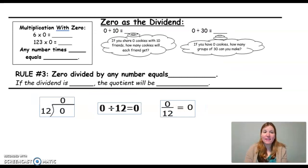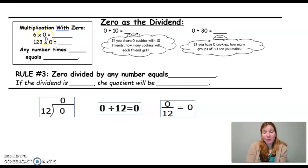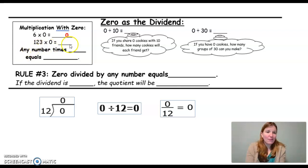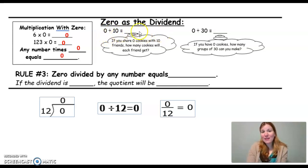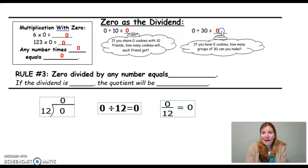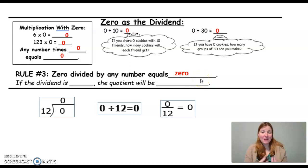Next, let's take a look at 0 as the dividend. Let's first review multiplication with 0. 6 times 0 means I have 6 cookies on each plate but I have 0 plates — 0 groups. It doesn't matter how many cookies are on the plate; if I don't have any plates, I have 0 cookies. 123 times 0 is 0. So any number times 0 equals 0. Thinking about that as division: if I start with 0 cookies and share them among 10 friends, how many cookies will each friend get? None, because I don't have any to begin with. Or if I have 0 cookies, how many groups of 30 can I make? I can make 0 groups because I don't have any cookies. So 0 divided by any number equals 0.